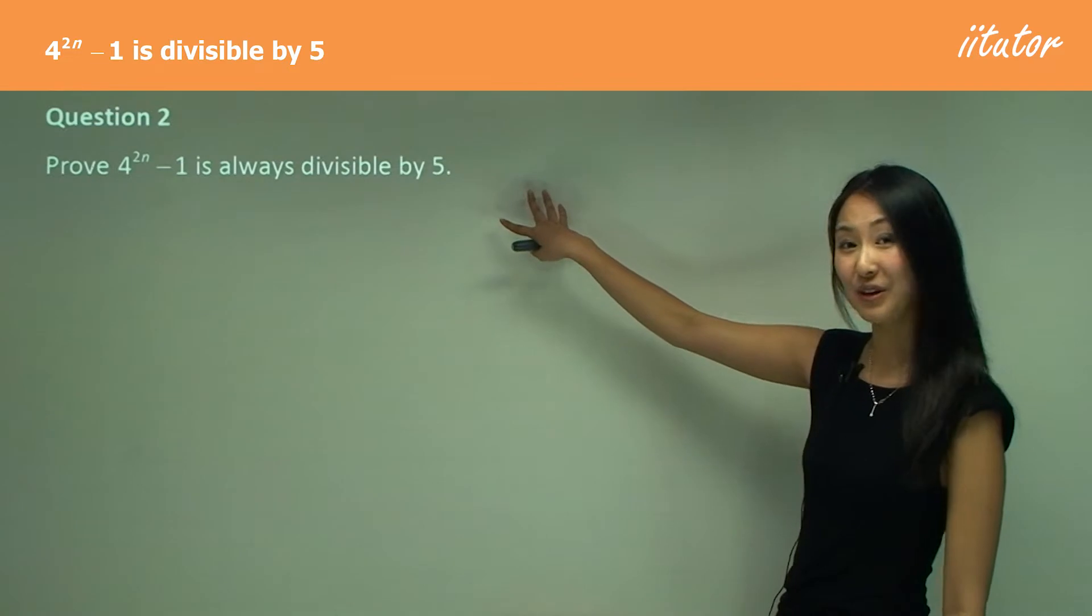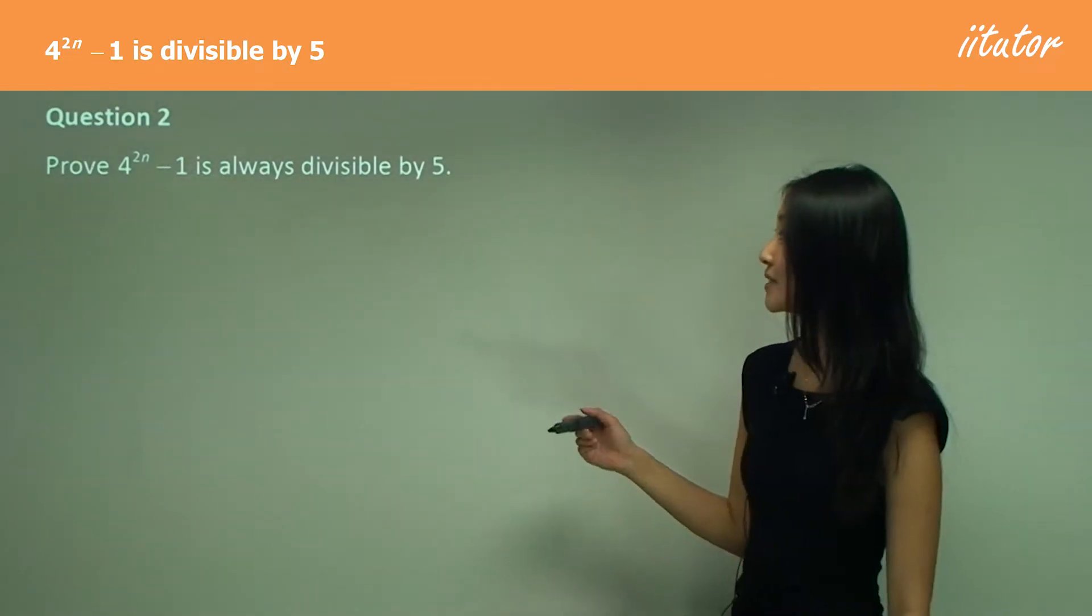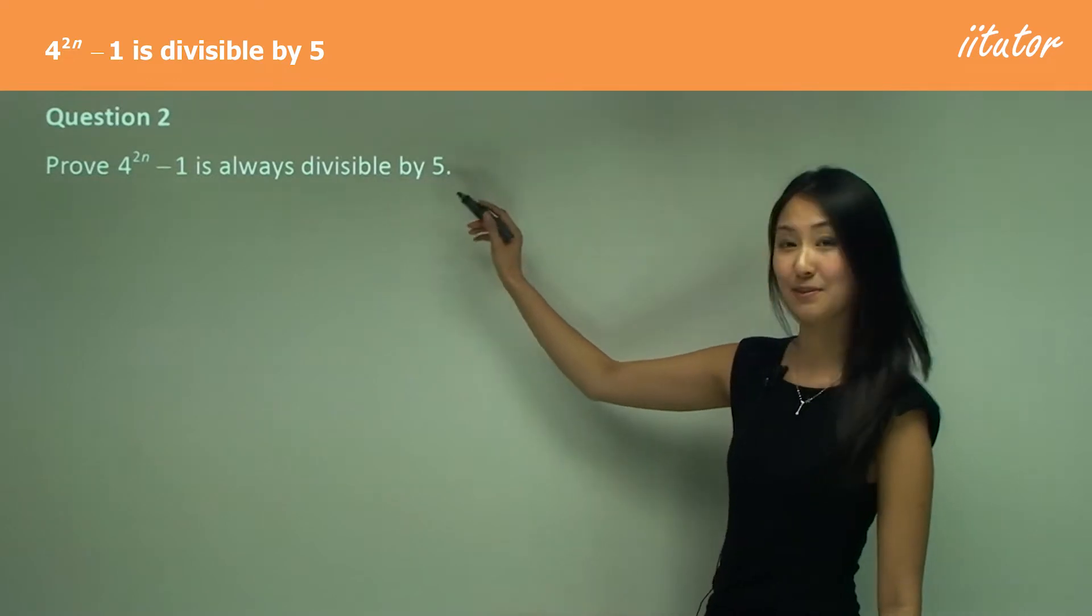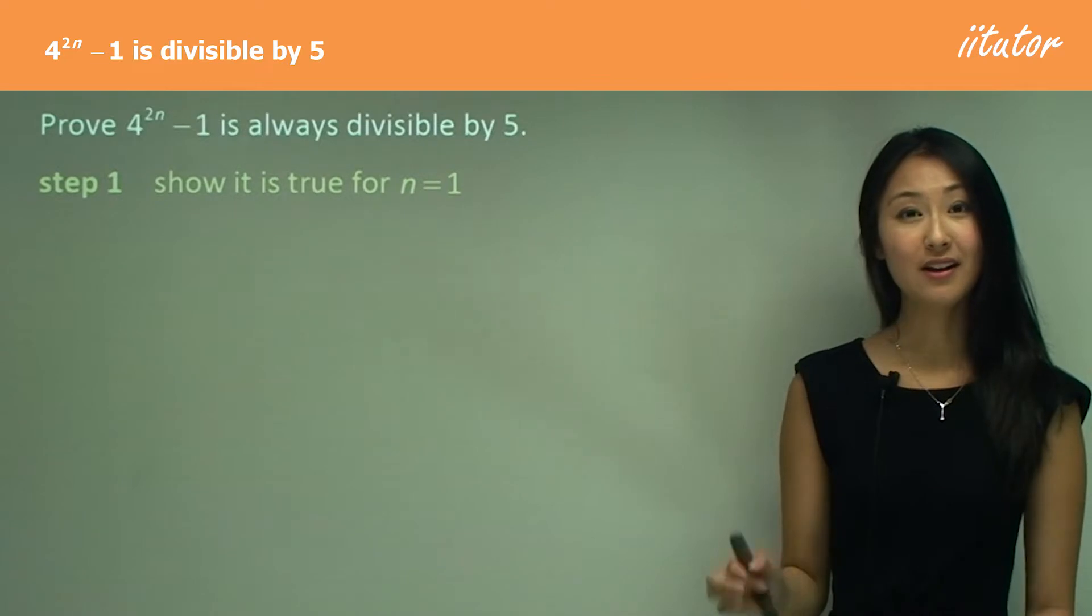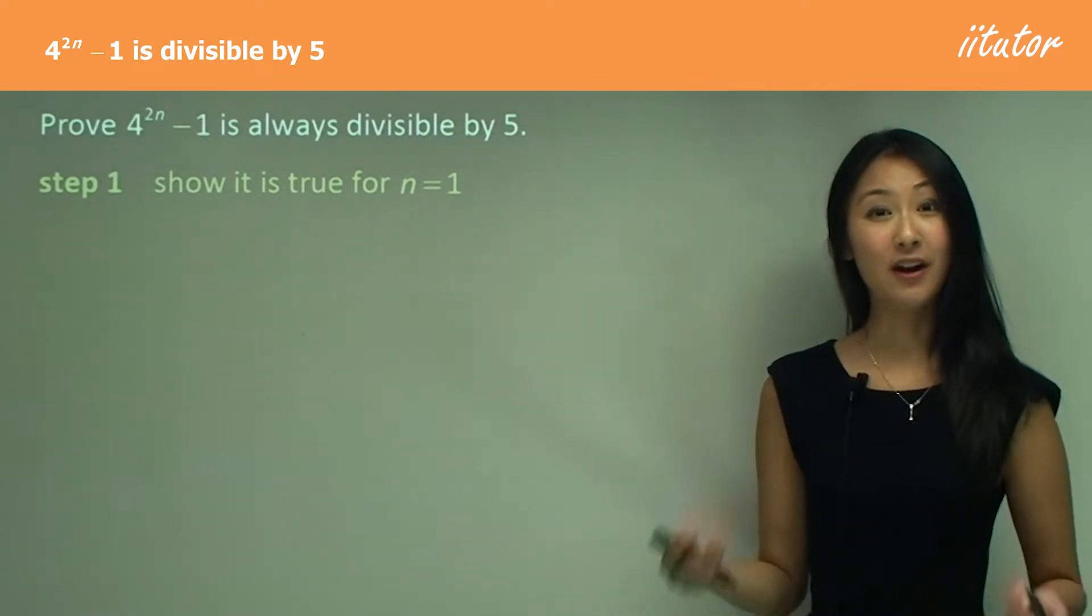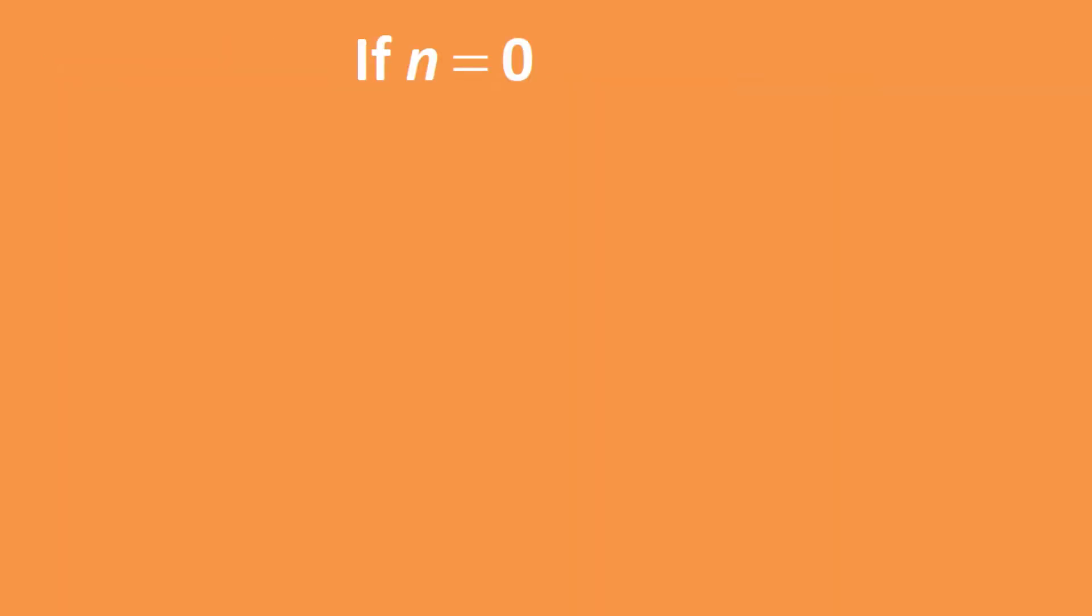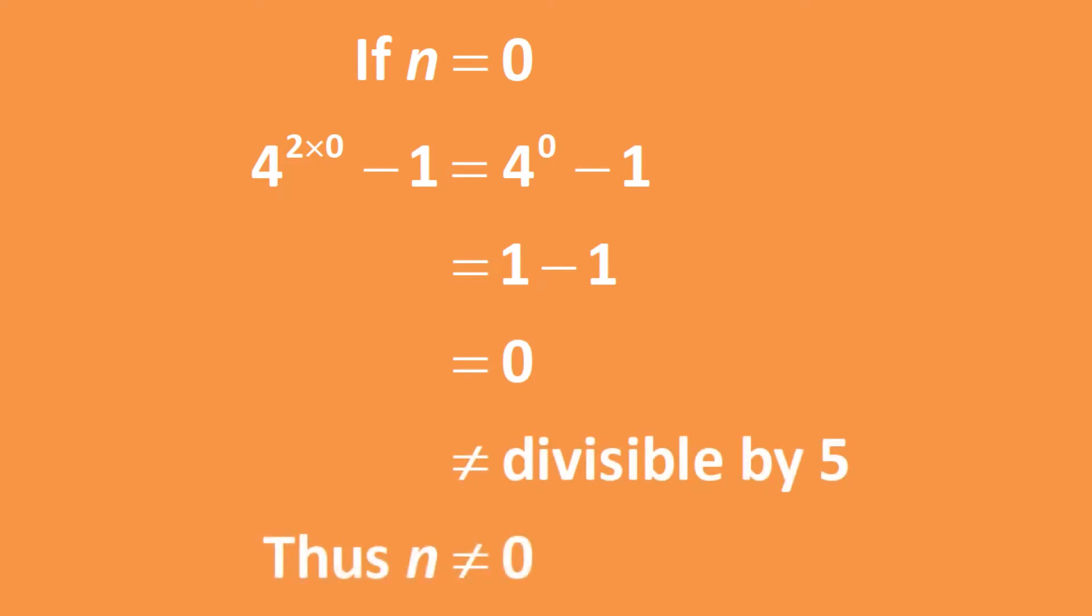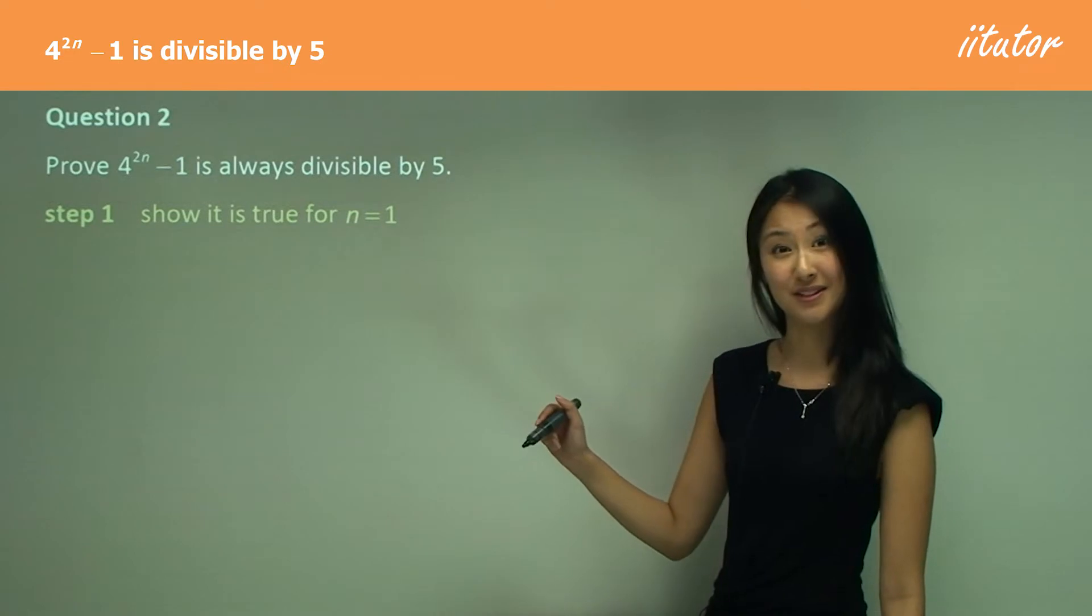In question 2, we want to prove that 4 to the power of 2n minus 1 is always divisible by 5. Firstly, in step 1, we show it's true for n equals 1. How do we know it's n equals 1, not n equals 0? Because if we substitute n equals 0, you have 4 to the power of 0, which is 1 minus 1, which is 0, which is not divisible by 5. So it's only true when n equals 1, not n equals 0.